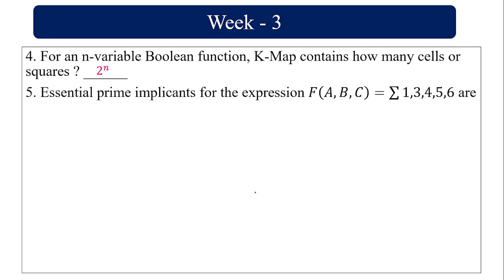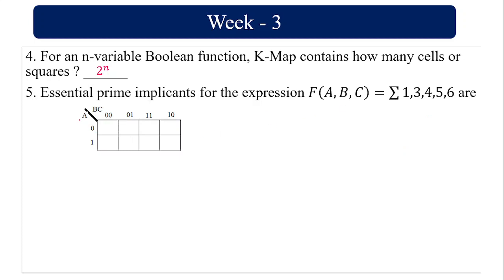Finding the essential prime implicants of f(A, B, C) = Σm(1, 3, 4, 5, 6). Since it's 3 variables, 2^3 = 8 cells. Drawing the K-map with A on one side and B on the other, filling in the gray code ordering: cells 0, 1, 2, 3, 4, 5, 6, 7.